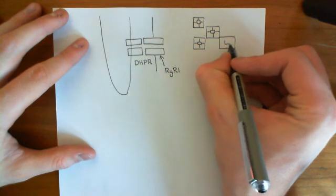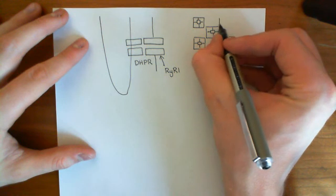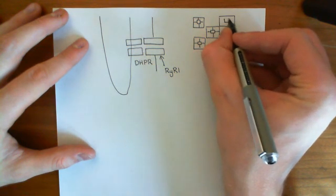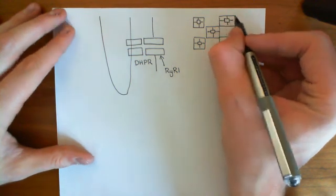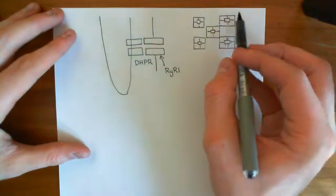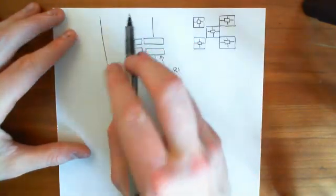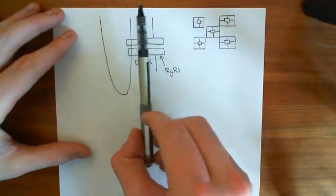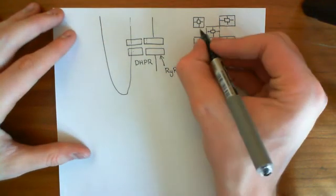Here's another ryanodine receptor of the first type, and you can continue the pattern. Now, if we look at where the dihydropyridine receptors are positioned with respect to this — all the ryanodine receptors are in this sarcoplasmic reticulum membrane — facing onto them will be the T-tubule membrane, and in that T-tubule membrane will be these dihydropyridine receptors.